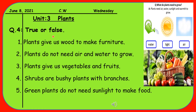First you have to read the sentence carefully, understand the meaning of the sentence, and then at the end of each sentence write T or F. If the sentence is correct, write T for True. If the sentence is not correct or incorrect, write F for False.